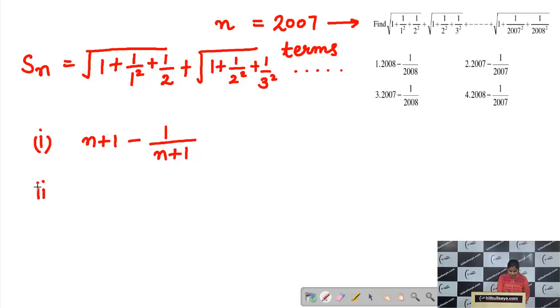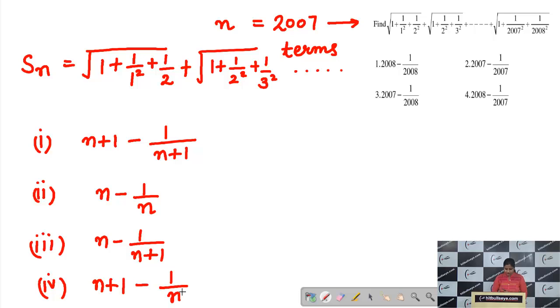Now coming to second option that will be N minus 1 upon N. Now taking the third option that is N minus 1 upon N plus 1. Now the fourth option that is N plus 1 minus 1 upon N. So these are the options we have converted the whole sum into N.